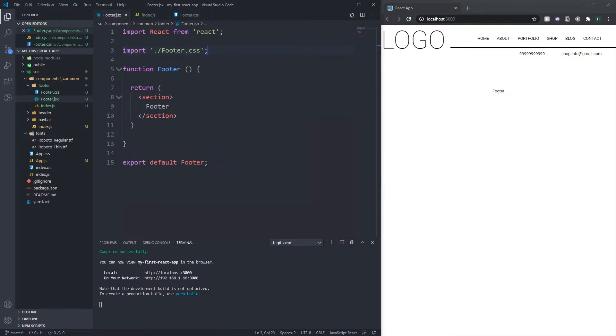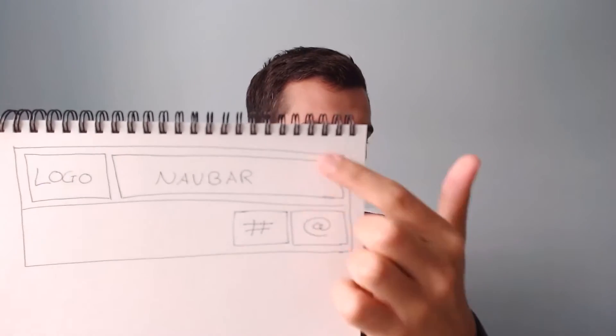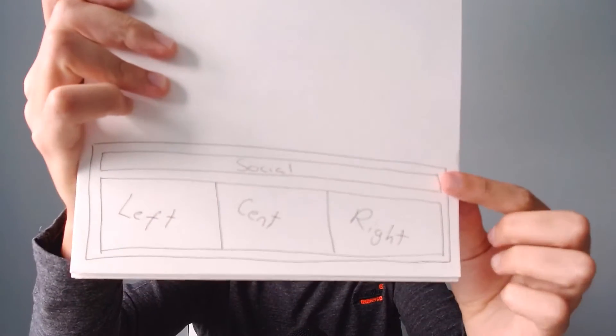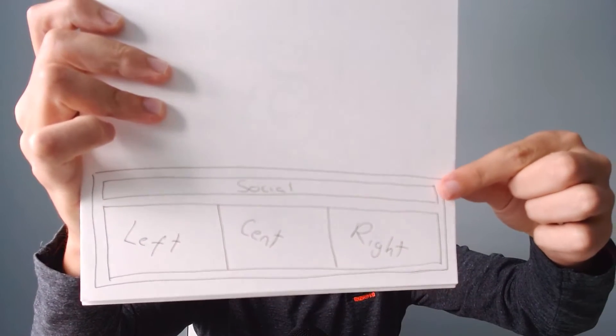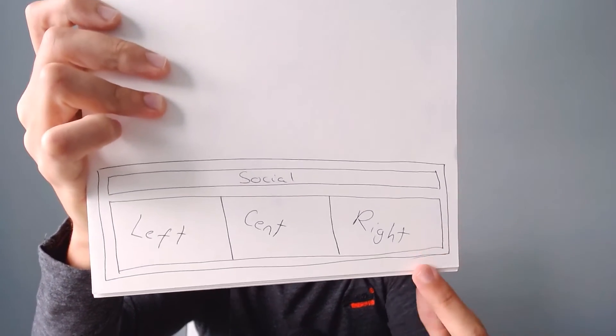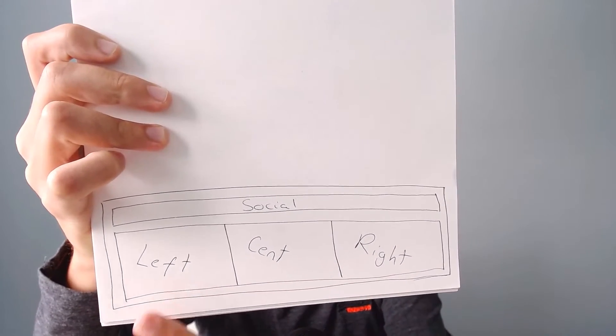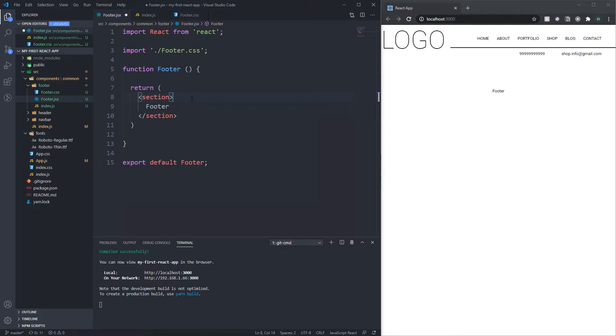Let's jump into the actual footer component and start building it out. I just want to quickly go through the design of the HTML elements before we start, like I did in my previous video. We've got that top section with the social media icons, and then a left, center, and right section that will have terms and conditions, contact info, and other bits at the bottom.